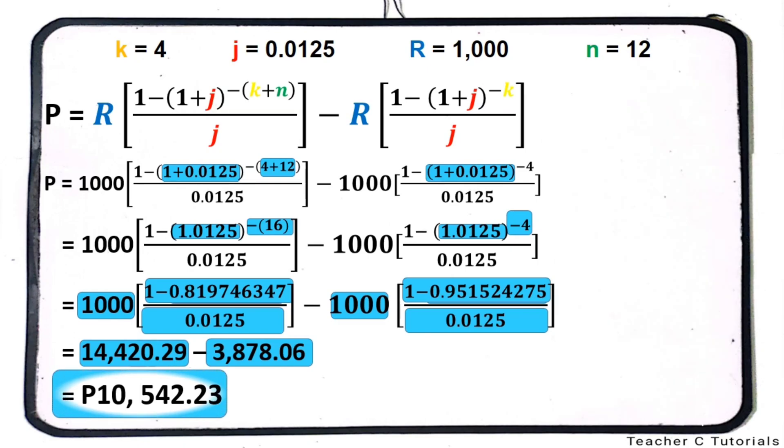Therefore, the present value of the annuity is 10,542 pesos and 0.23 centavos. That's it. If this video helped you, do not forget to subscribe to my channel. Thank you and God bless.